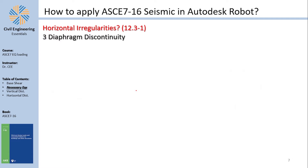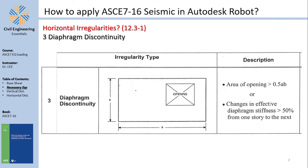Diaphragm discontinuity means holes in slabs. If the opening exceeds 50% of the slab area, that is a diaphragm discontinuity. Alternatively, if the change in stiffness between adjacent stories exceeds 50% — even when the opening is less than 50% — the stiffness difference between the two slabs qualifies as a diaphragm discontinuity.